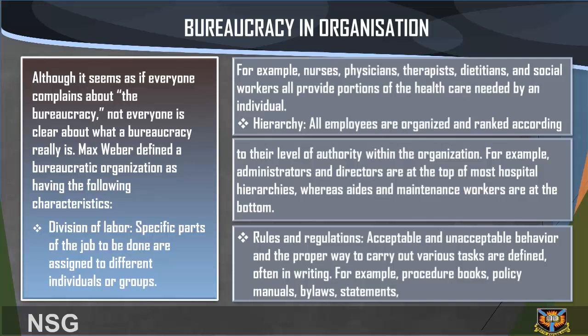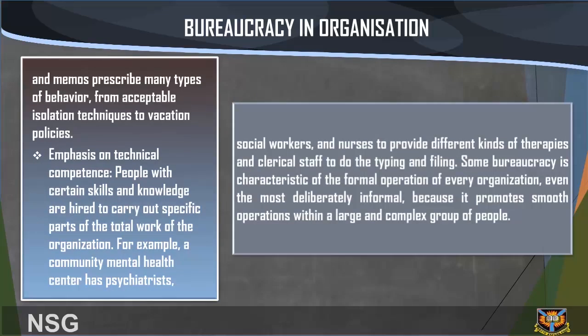Second, hierarchy: all employees are organized and ranked according to their level of authority. For example, administrators and directors are at the top of most hospital hierarchies, whereas aides and maintenance workers are at the bottom. Third, rules and regulations: acceptable and unacceptable behavior and the proper way to carry out various tasks are defined, often in writing — for example, procedure books, policy manuals, bylaws, statements, and memos that prescribe behavior from acceptable isolation techniques to vacation policies.